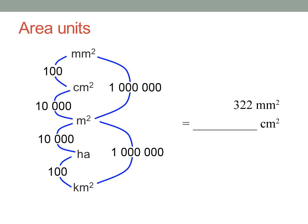Three hundred and twenty-two square millimetres is how many square centimetres? Square centimetres are bigger than square millimetres, so I need less of them — divide. Three hundred and twenty-two divided by one hundred is three point two two square centimetres.